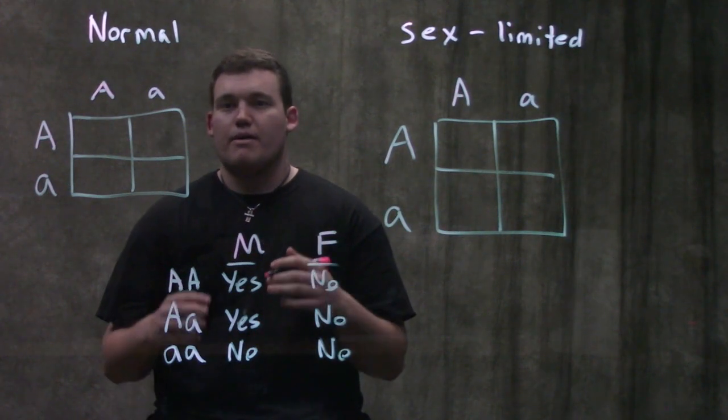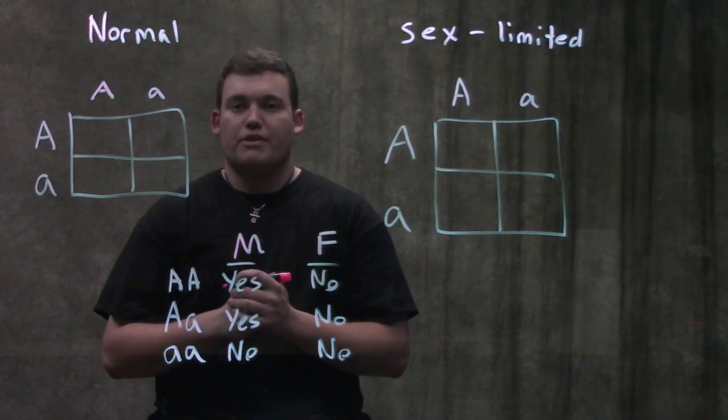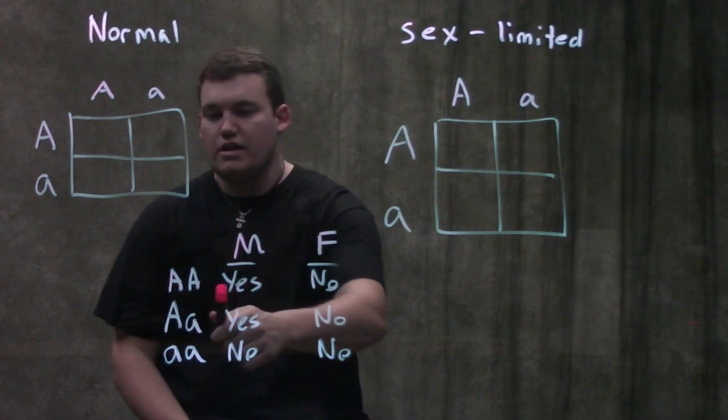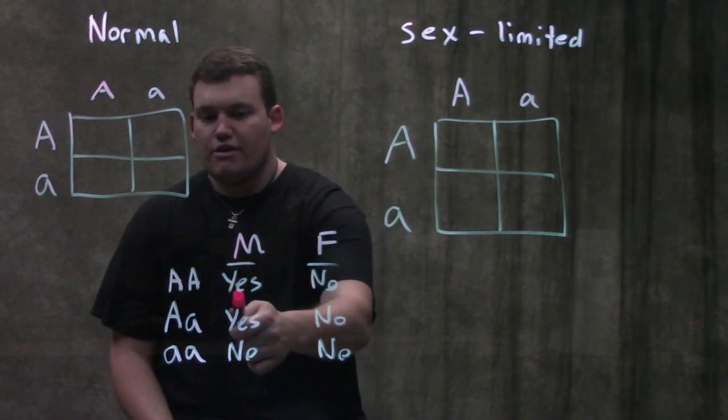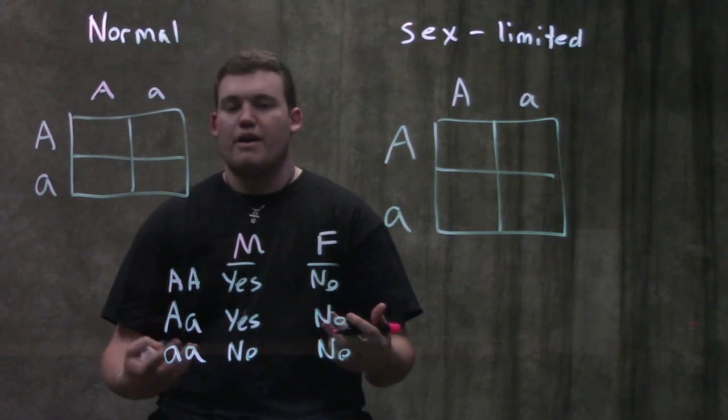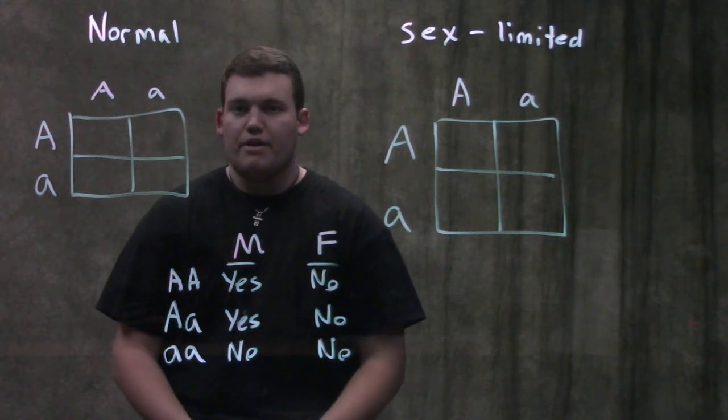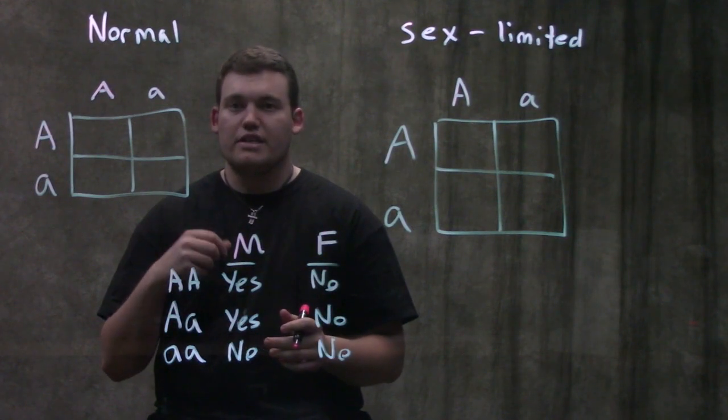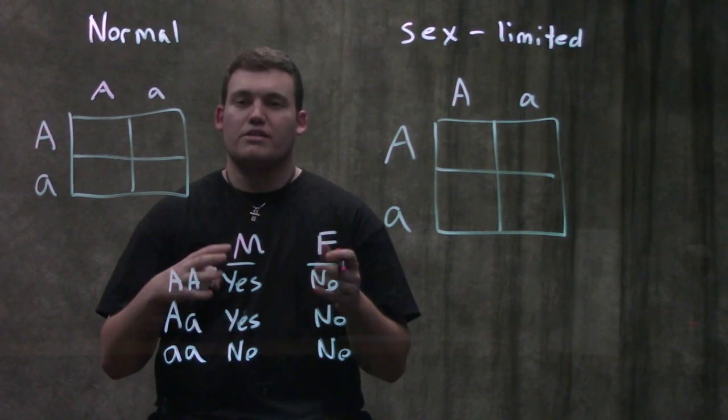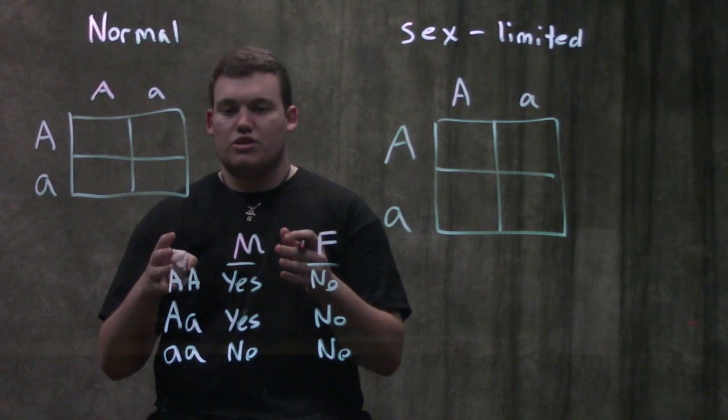And what that means is that the bearded allele is the dominant allele here. So you're going to see big A, big A, the dominant allele is going to be expressed. Here in males we see it, yes, we have a bearded male. But here in females, even though that female is big A, big A, you're going to see that the female is not going to show it. That's because this trait is limited just to males.